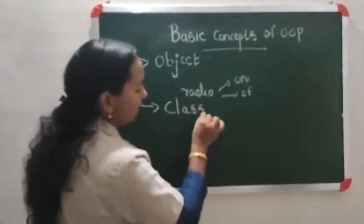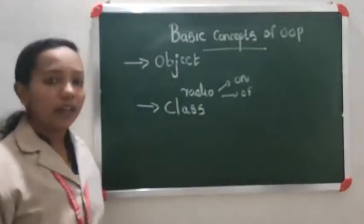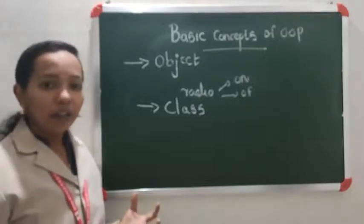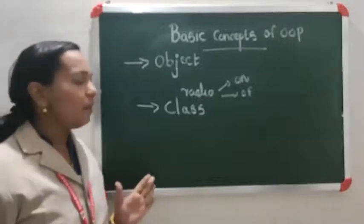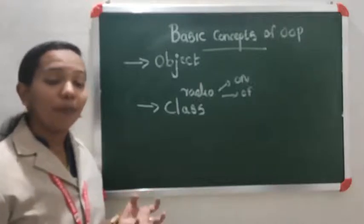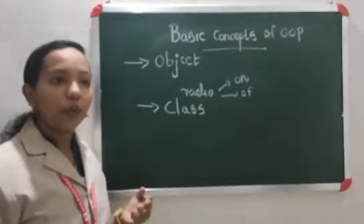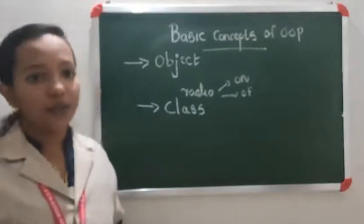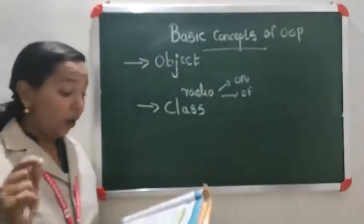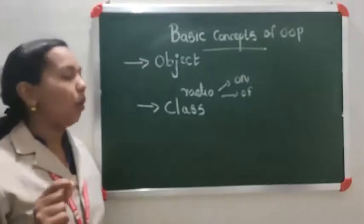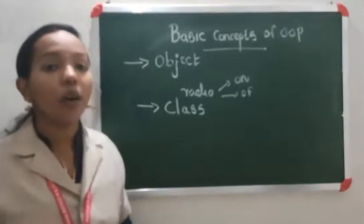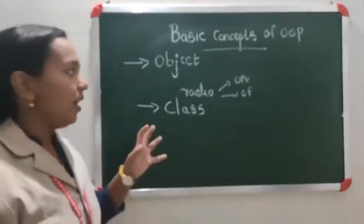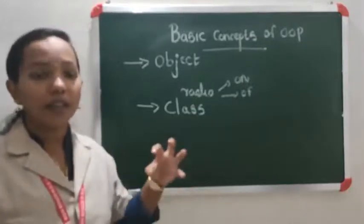The second basic concept of object-oriented programming is class. Actually, class is similar to structure — we use structure for grouping elements, and the same concept is used in class also. Class is used for grouping similar elements. A class is a prototype or blueprint that defines specifications common to all objects. If there are any similarities between objects, then we can group all those objects into a single class.